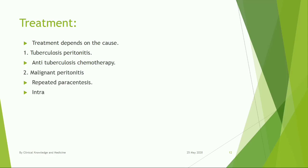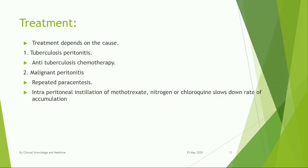For malignant peritonitis: repeated paracentesis and intraperitoneal instillation of methotrexate, nitrogen mustard, and chlorocholine to slow down the rate of accumulation.